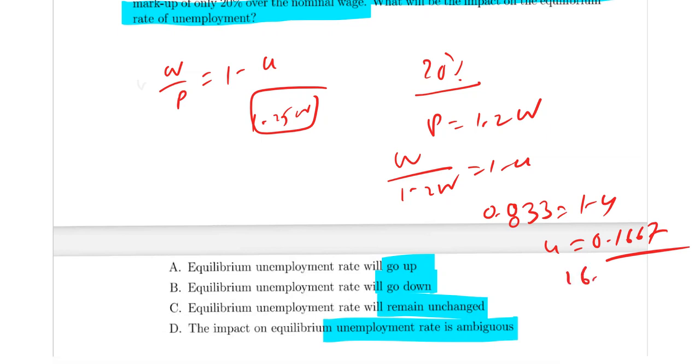Comparing the initial and new levels of equilibrium rates, we can see that the equilibrium unemployment rate decreases when the market power of the monopolist firm decreases. The markup decreases from 25% to 20%, so unemployment goes down.